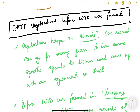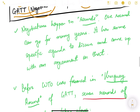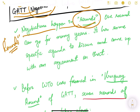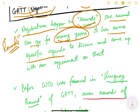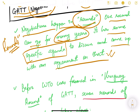Before WTO, GATT — the General Agreement on Tariffs and Trade — held rounds of negotiations. Negotiations always happen in rounds, and one round can go on for many years because each round has a specific agenda to discuss and an agreement to reach. For example, if a round's agenda is to reduce non-tariff barriers, discussions continue — the Ministerial Conference sits every two years, the General Council provides support — until agreement is reached.